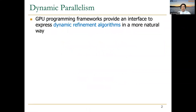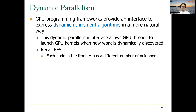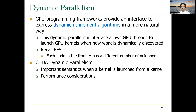Dynamic parallelism provides an interface to express dynamic refinement algorithms in a more natural way. This dynamic parallelism interface allows GPU threads to launch GPU kernels when new work is dynamically discovered. You might remember the example of BFS that we covered in one of the parallel patterns lectures, where each node in the frontier has a different number of neighbors, and due to that, we need a different number of iterations for each of the nodes in the frontiers. We found different ways of dealing with this irregularity in the parallelization, but this could also be solved in an easier way by using dynamic parallelism.